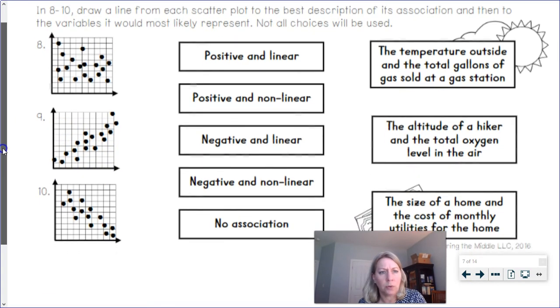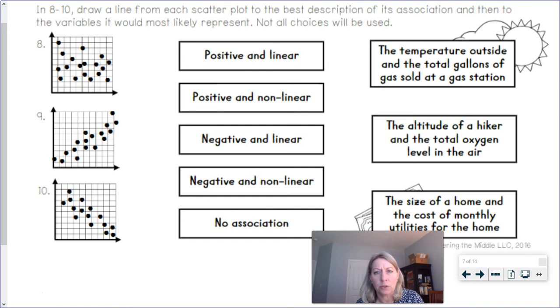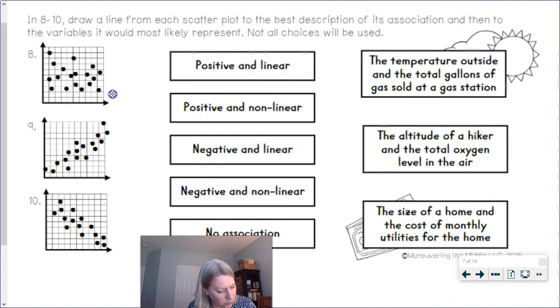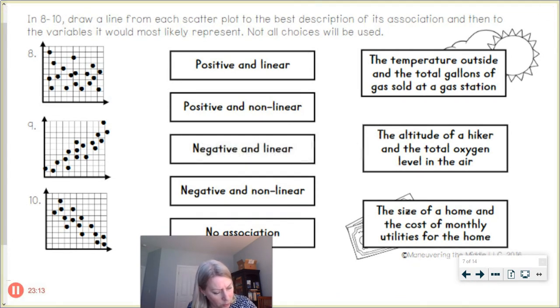All right. In number eight, nine, and ten, we're going to draw a line from each scatter plot to the best description of its association and then to the variables it would most likely represent. Not all choices will be used here. So let's look at number eight. Eight looks like there's a lot of scattered dots. I really can't tell at some times if those dots are going, they look like they start going a little downwards from left to right, but then they look kind of trending upwards as we scan across that graph from left to right. So I would say that's kind of like a no association situation. So I'm going to connect number eight with no association.